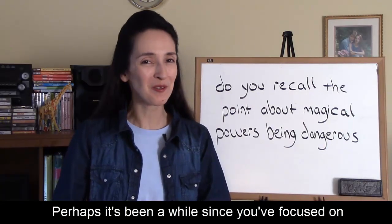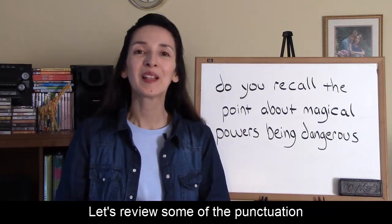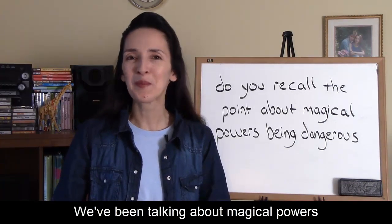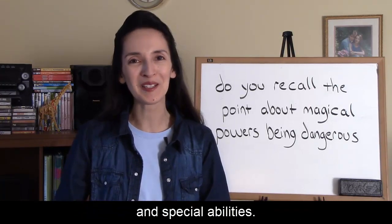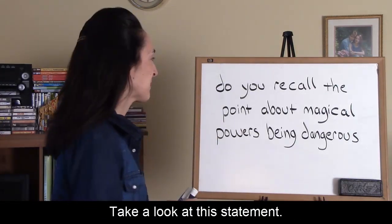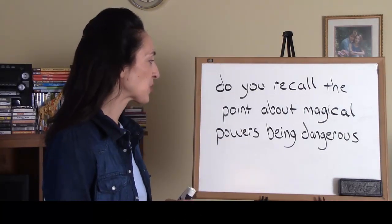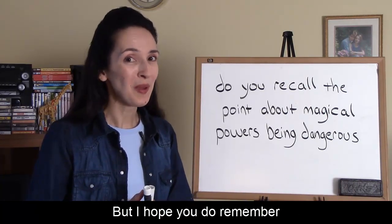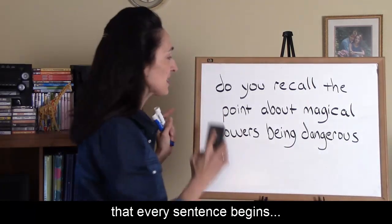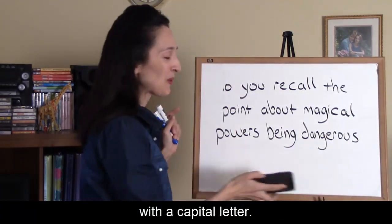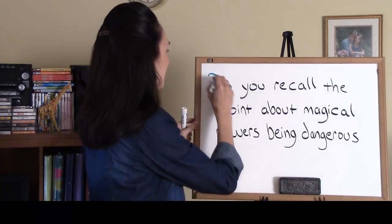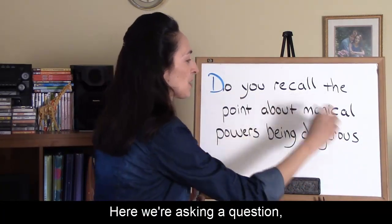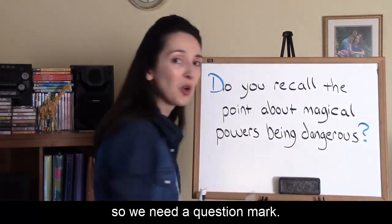Perhaps it's been a while since you focused on writing skills in English. Let's review some of the punctuation that's been covered so far in this series. We've been talking about magical powers and special abilities. Take a look at this statement: 'Do you recall the point about magical powers being dangerous?' Every sentence begins with a capital letter, and every sentence must have final sentence punctuation. Here we're asking a question, so we need a question mark.